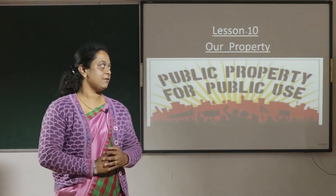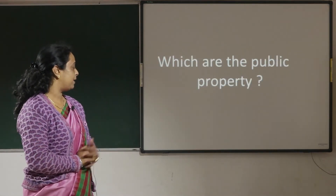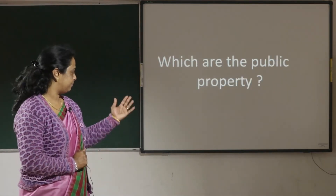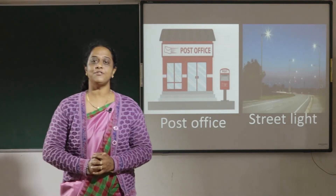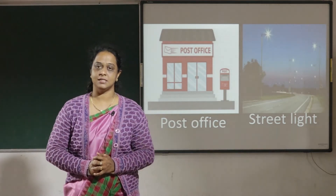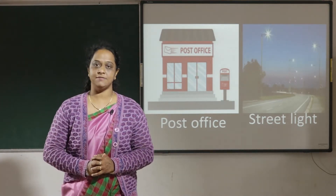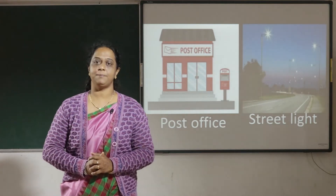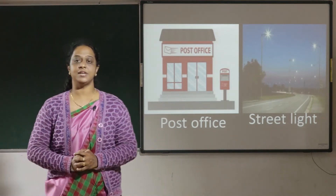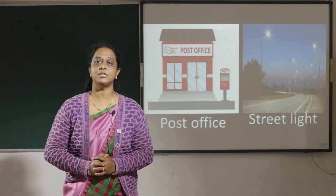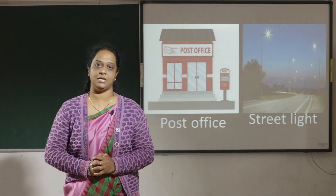Now let's see which are the public properties. This is a post office. The post office helps us to send letters to friends and relatives who are in different places. Next is street light. Street lights help us to walk during the night in town and village.